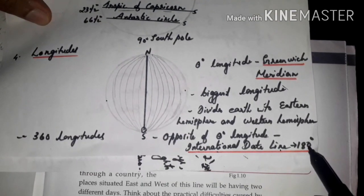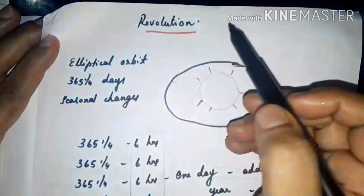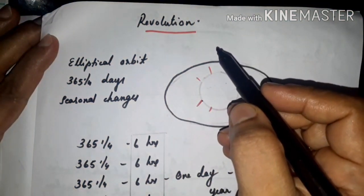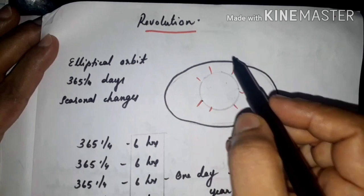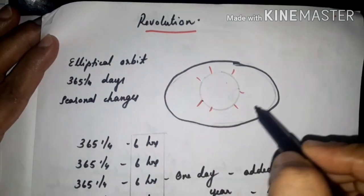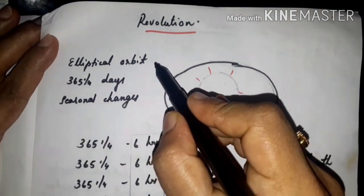And the next topic is revolution. What is revolution? Earth revolves around the sun in an elliptical orbit.